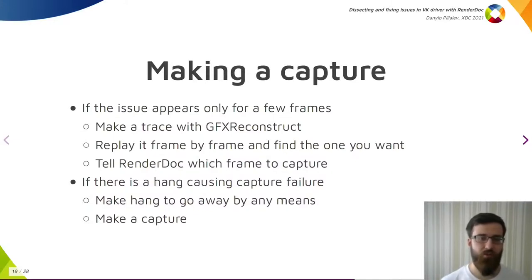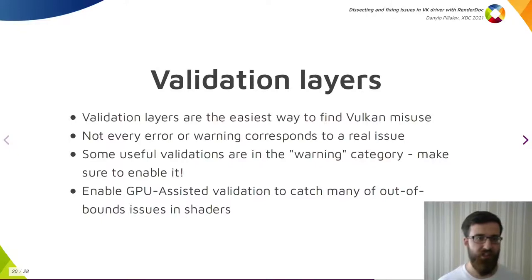That's all about RenderDoc. What else could we do besides inspecting the frame? Before even inspecting the frame, it is a good idea to use Vulkan validation layers to find whether application violates the spec, and there is no point in investigating further. Validation layers are the easiest way to find Vulkan misuse, and should be the first thing you would try. However, not every error or warning corresponds to a real issue, and it may be hard to distinguish them. Though they could tell which places to check first with RenderDoc. Some useful validations are in the warning category, which isn't enabled by default. Make sure to enable it. The last option is to enable GPU-assisted validation to catch out-of-bounds issues in the shaders, if there are any.